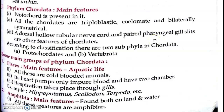In primitive yaani bahut purane Chordata mein yeh paai jaati hai — gill slits paaye jaate hain. Aur unka kaam hota hai filter food particles from water. Jaise paani andar jaata hai munh ke andar, toh yeh filter ka kaam karte hain — food particles ko water se alag karte hain. Aur yeh amphibians mein hoti hai. Teen important features hain jo aapko yaad rakhne chahiye: Notochord present hai, nerve cord present hoti hai, aur pharyngeal gill slits.